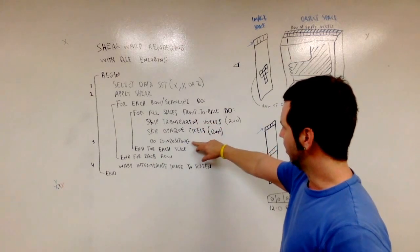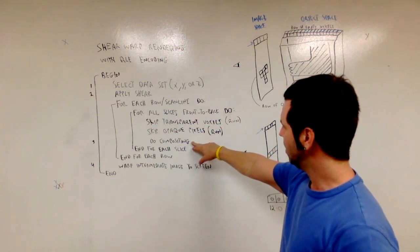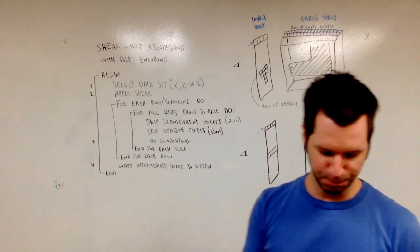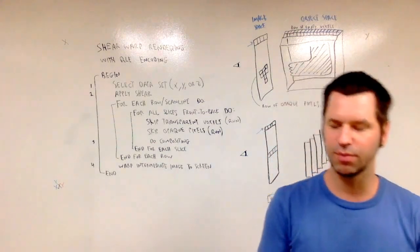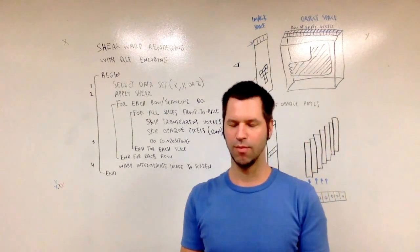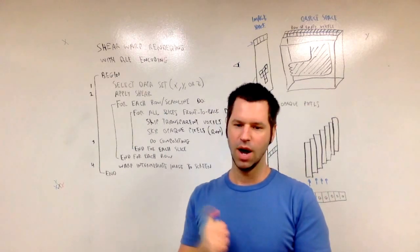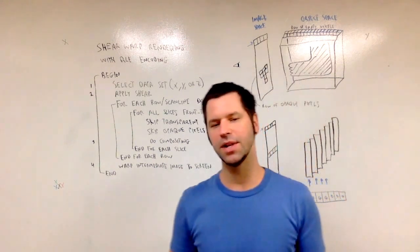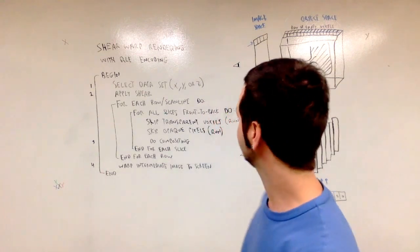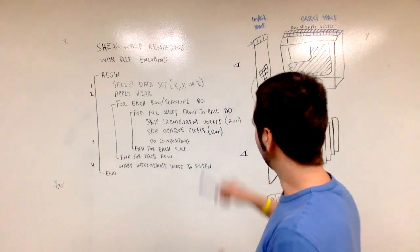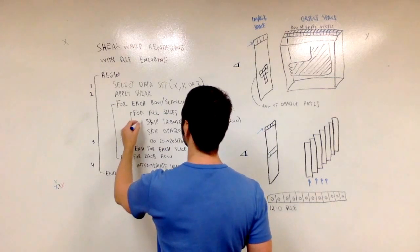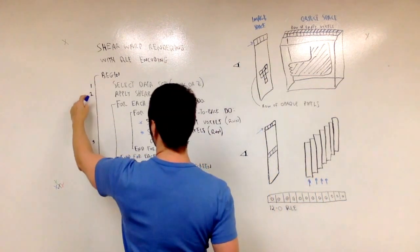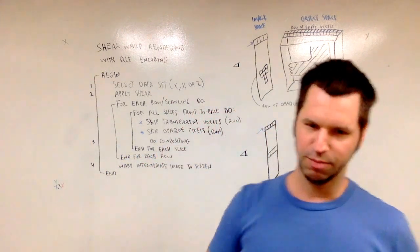So after we've done our skipping or compression steps, we have the compositing phase. And then warp intermediate image to screen. So I summarized those steps in a previous video which was the summary of the shear warp factorization algorithm. I recommend watching that video before this one. This one goes into detail about the compression and acceleration. Now I'm going to focus on these two steps. So for the steps one, two, and four, look at the previous video.